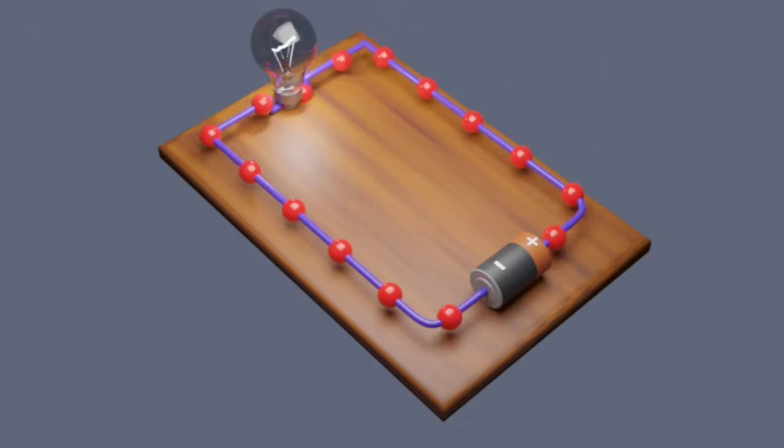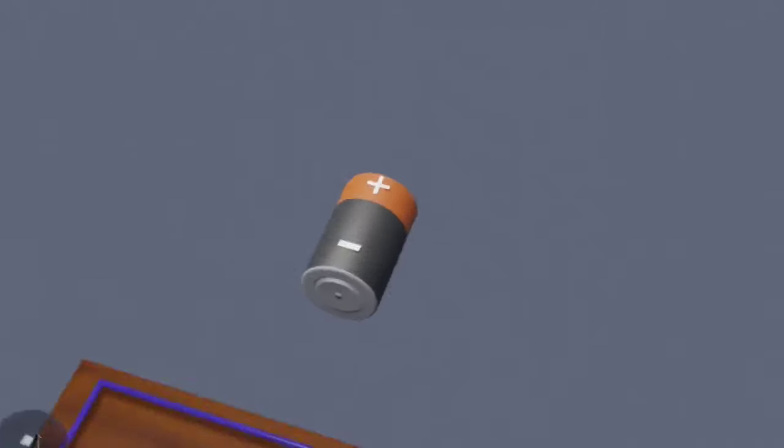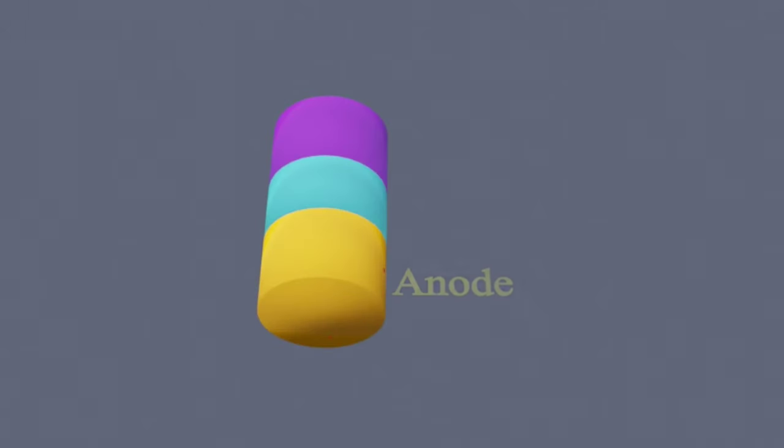Here the voltage is provided by battery. Battery has mainly three types of components: anode, electrolyte and cathode.